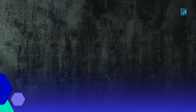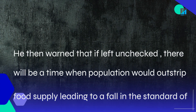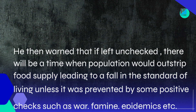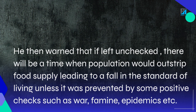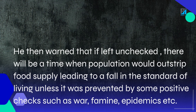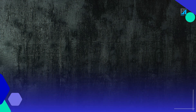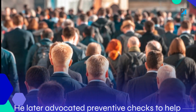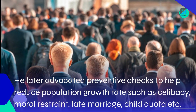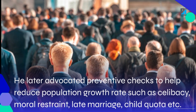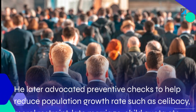He warned that if left unchecked, there will be a time when population would outstrip food supply, leading to a fall in the standard of living, unless prevented by positive checks such as war, famine, and epidemics. He later advocated preventive checks to help reduce population growth rates, such as celibacy, moral restraint, late marriage, and child quota.